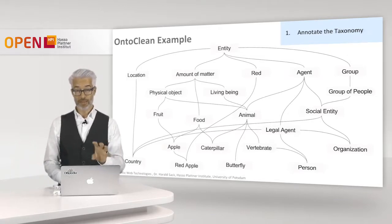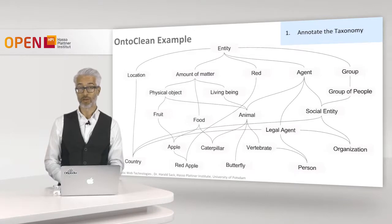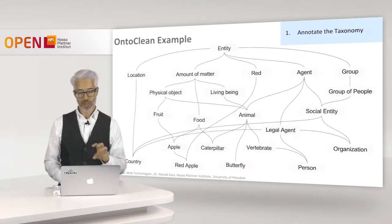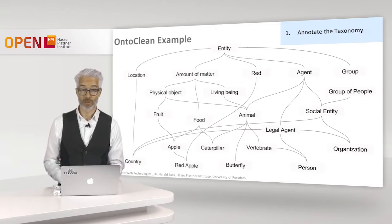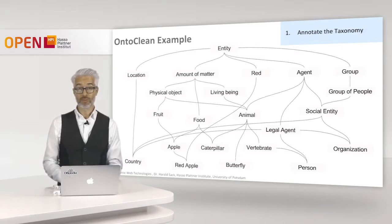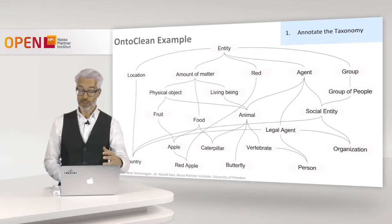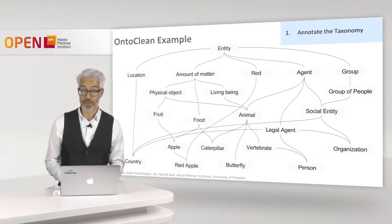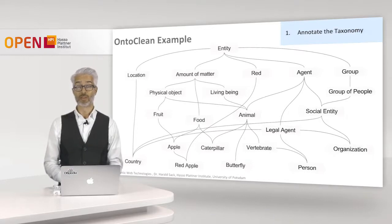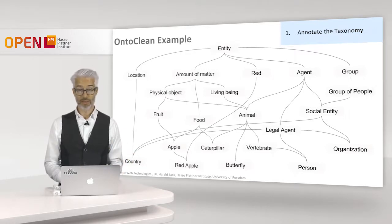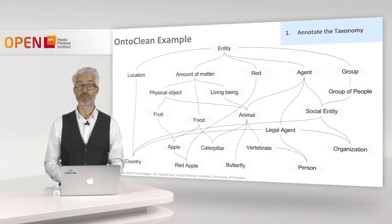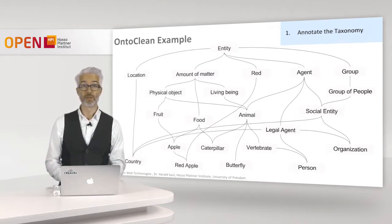The question is: is this ontology somehow correct? Does it really fit the real world as intended? Therefore we have to validate it by applying OntoClean. The first thing OntoClean requires is annotation with so-called meta-properties: rigidity, identity, unity, and dependency. We must annotate each single property — which are here classes in our taxonomy — with these meta-properties, and then we apply the rules.